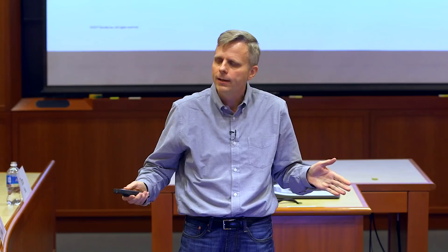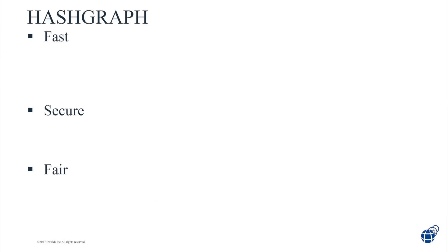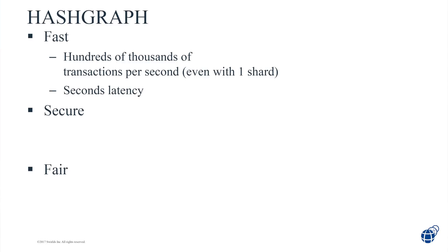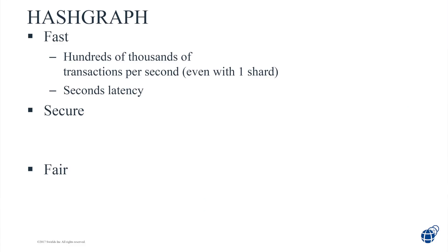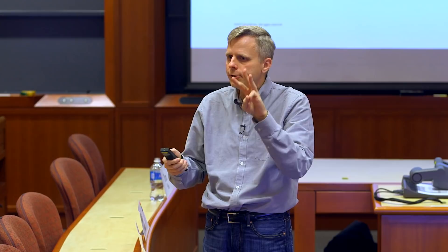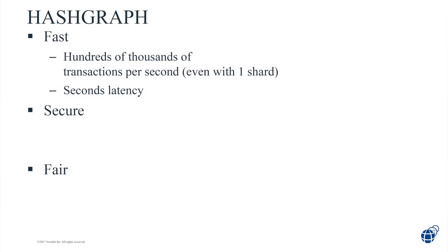What do we mean by fast? For throughput, you want to know how many transactions per second you can do. A credit card system might do 10,000 payments per second; Bitcoin is more like three transactions per second. For Hashgraph, throughput is hundreds of thousands of transactions per second — we've done experiments across the country and around the world. We also have very low latency: a few seconds or even a fraction of a second from when you create a transaction.